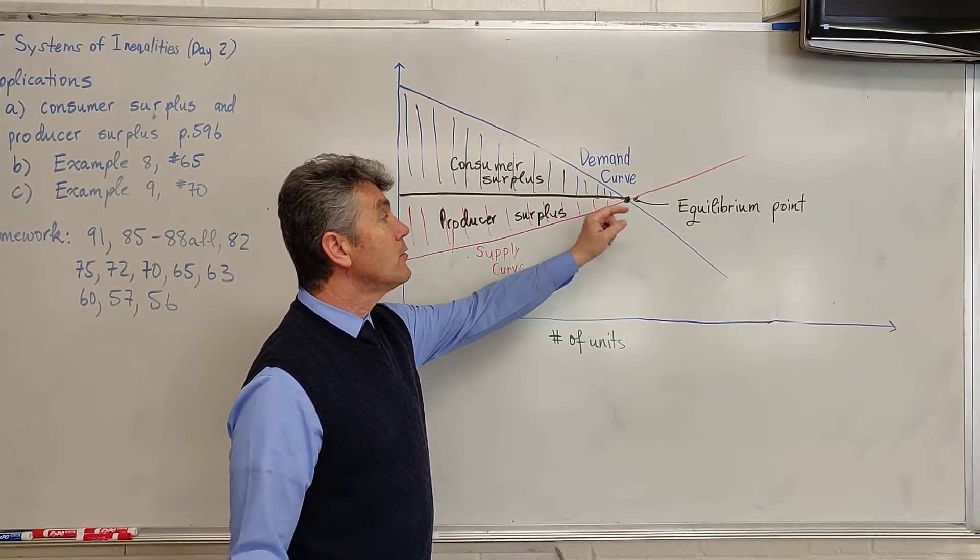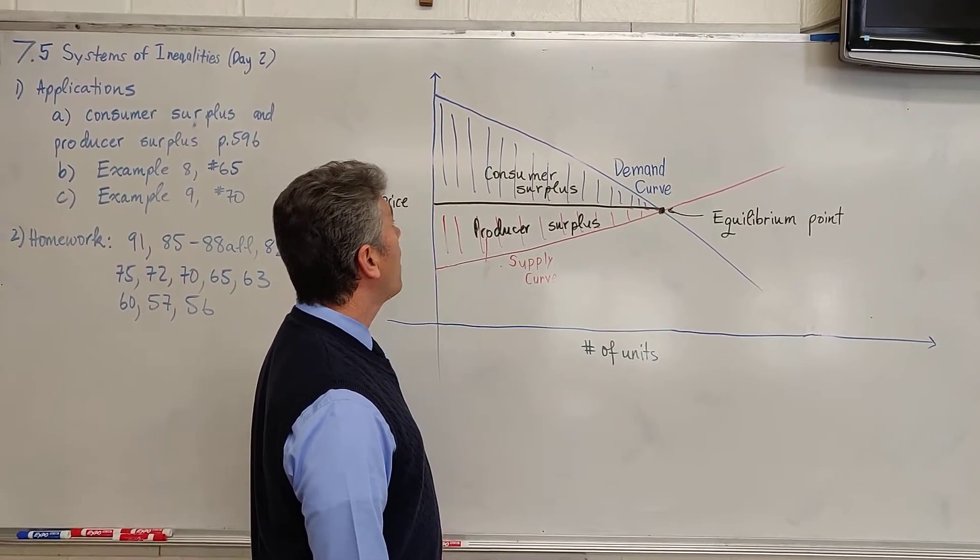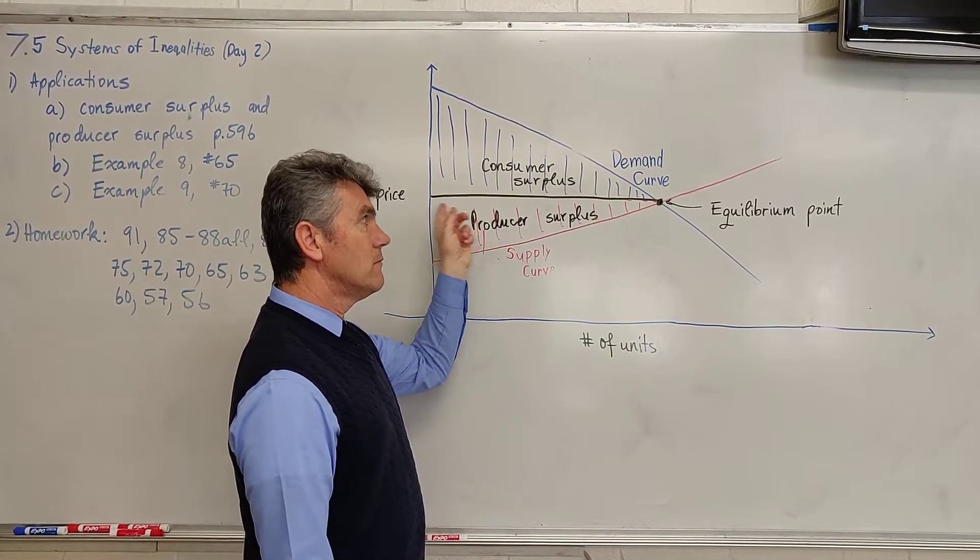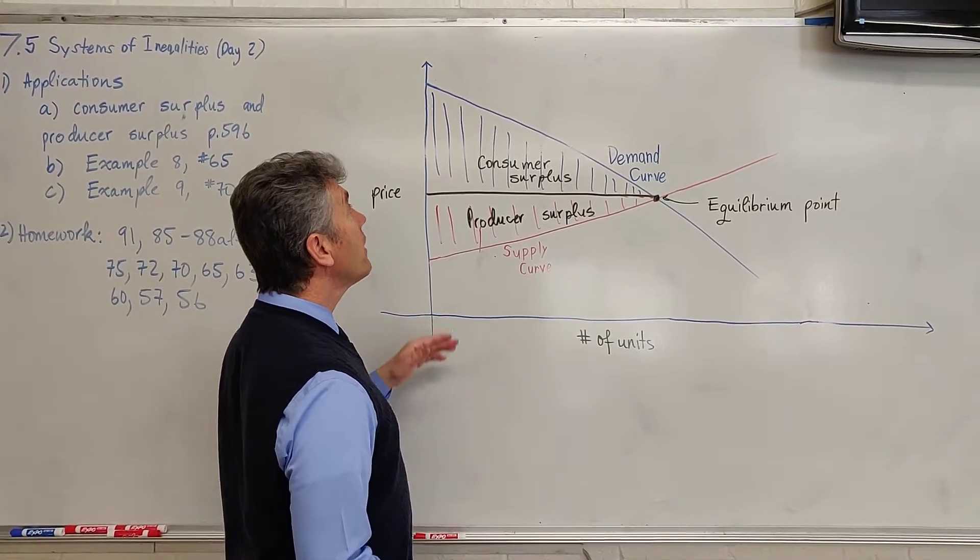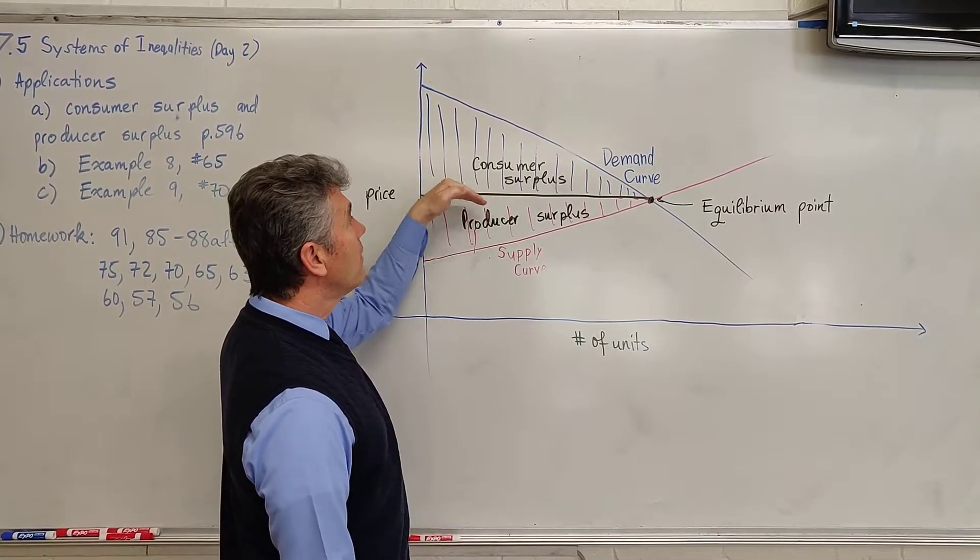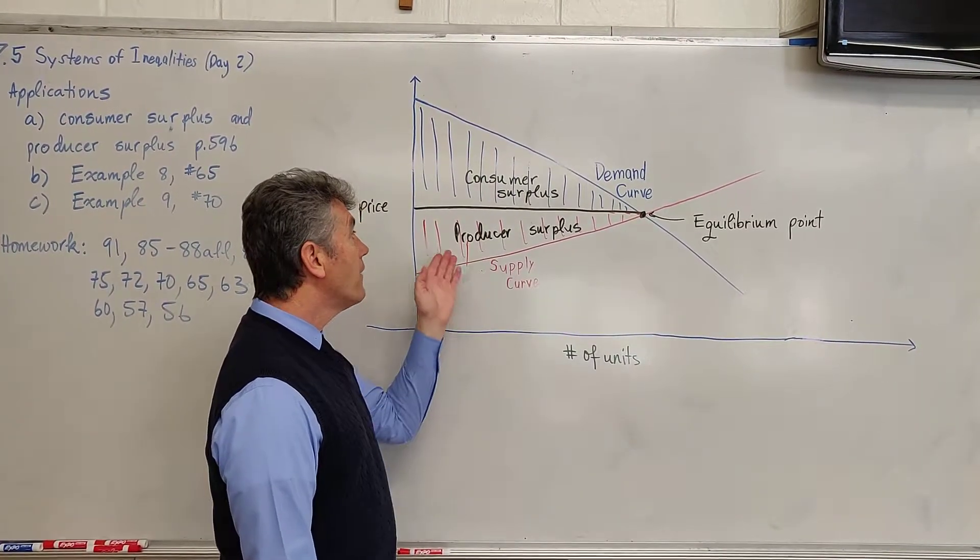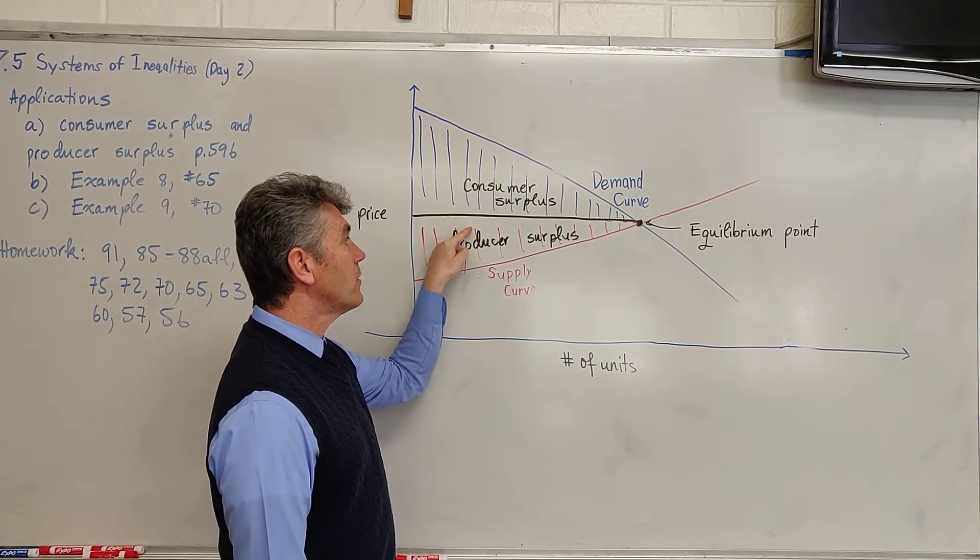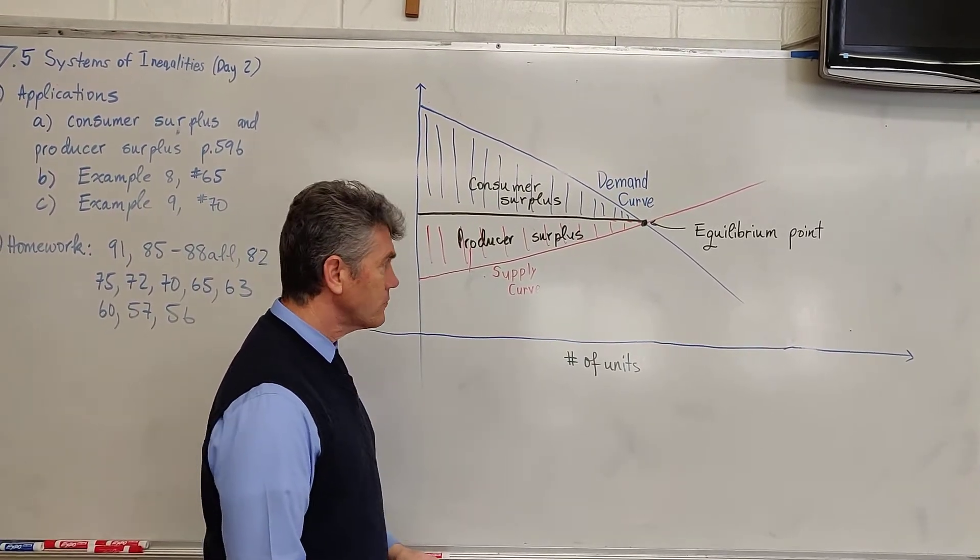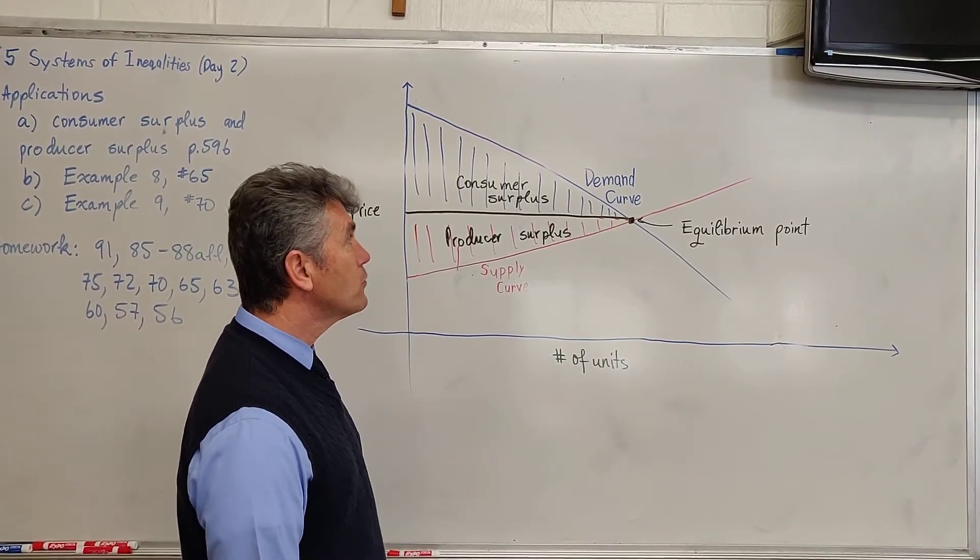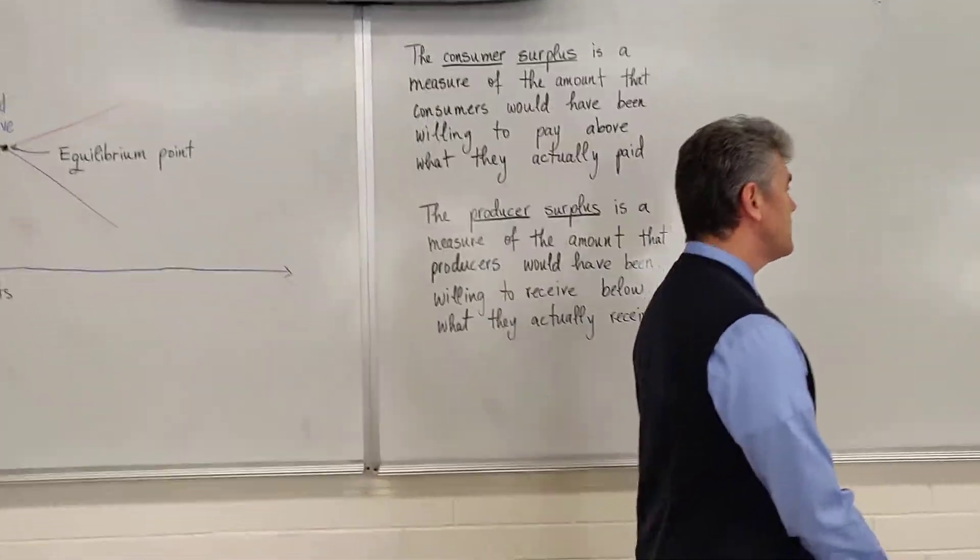Once you find this equilibrium point, you draw a horizontal segment that intersects the Y axis. After drawing the horizontal segment, you have formed two right triangles. The area of the triangle that is below the demand curve but above this horizontal line is called the Consumer Surplus. The area below the supply curve is known as Producer Surplus. This is the math part. Now I'm going to actually do an example.